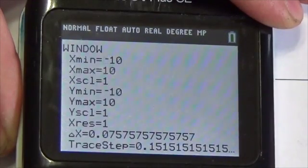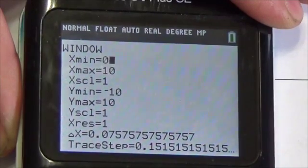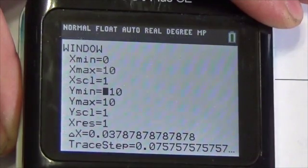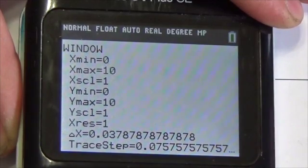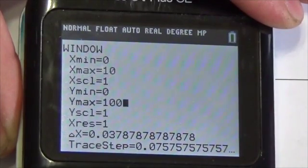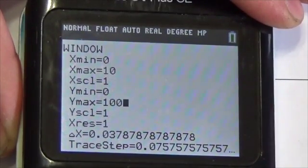Now, I'm going to go to my window settings. It probably doesn't make sense to have negative times, so we'll start time at 0. And it doesn't make sense to talk about negative amounts, so we'll make sure that that's at 0. We're going to start with 100 grams, whatever, 100% of the original sample here.